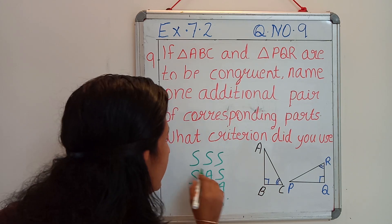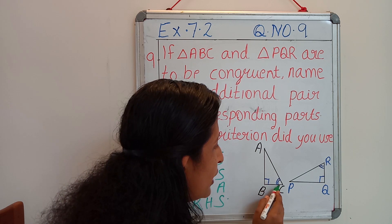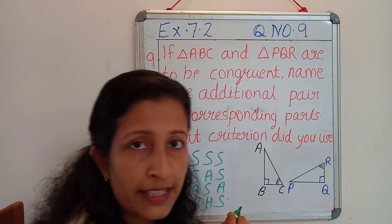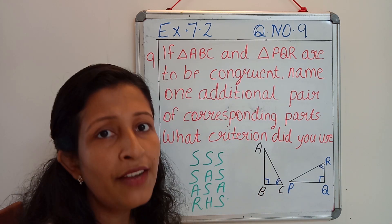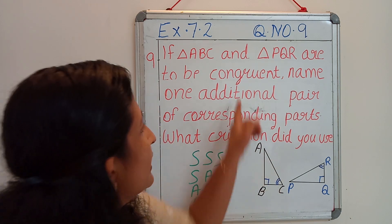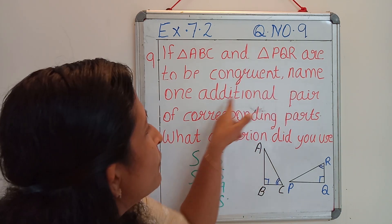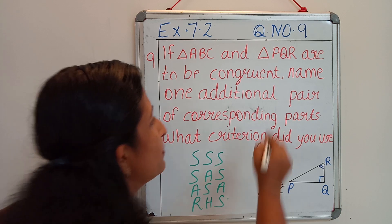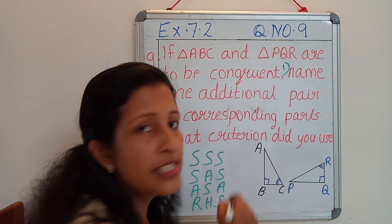Here they have given only two angles. That extra data we should find out first. That is our first question: name one additional pair of corresponding parts. This is our first question.